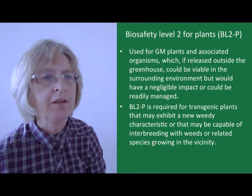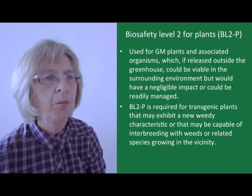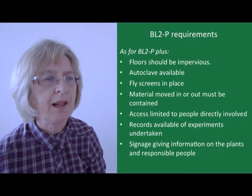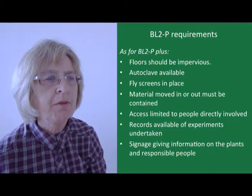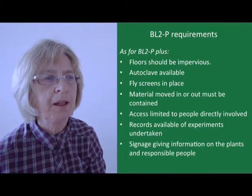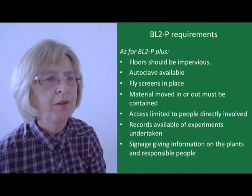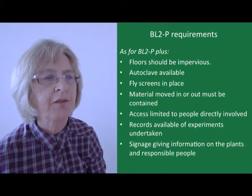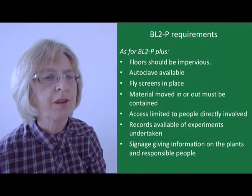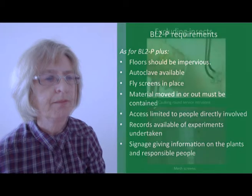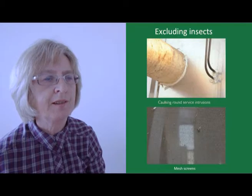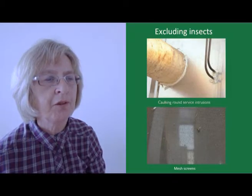However, if the surrounding area around the greenhouse is kept clear of wild relatives beyond normal pollination distances, it may be possible to avoid resorting to this level of containment. At this level, the greenhouse floor should be impervious and an autoclave should be available. With the aim of limiting access by insect pollinators, flyscreens should be in place over the vents. Material moved in or out of the facility must be contained. Access to the greenhouse should be limited to the people directly involved, and records should be kept of all experiments undertaken. Additionally, there should be signs showing what plants are in the greenhouse and who the responsible people are. This also includes caulking around service intrusions and mesh screens to exclude insects.